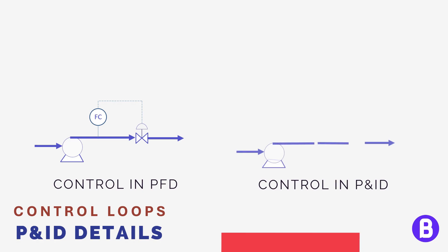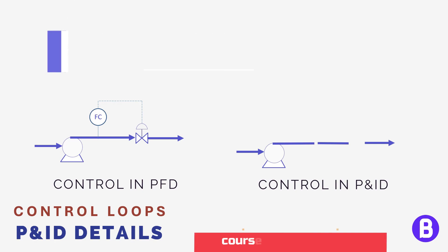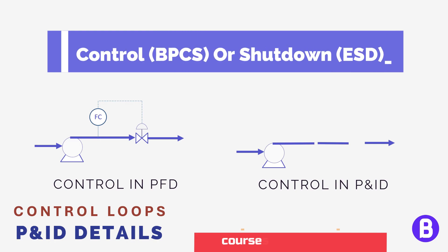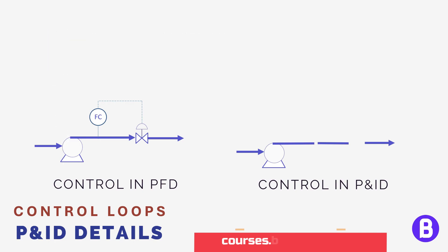So if this is a control loop of a pump discharge in the PFD, in the P&ID we would need to show more details. As we said, instruments send their readings to the downstream system. This system can be either the basic process control system, which is BPCS, or it can be the safety instrumented system, which is SIS, or in other words ESD for emergency shutdown.